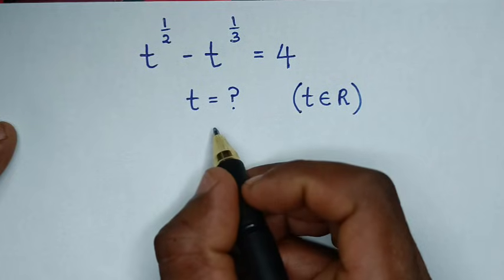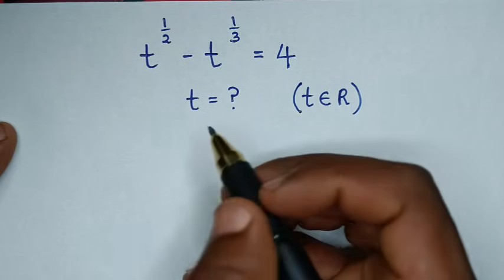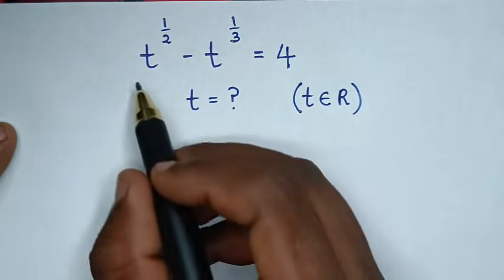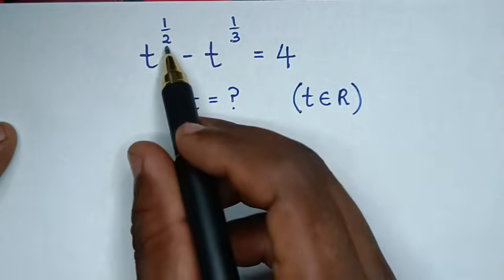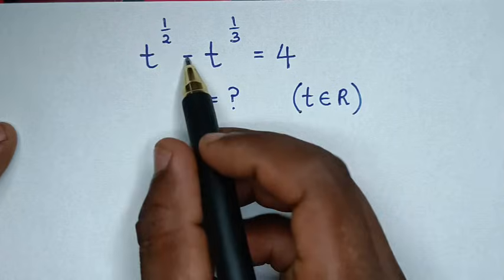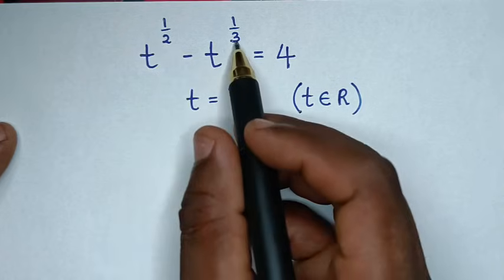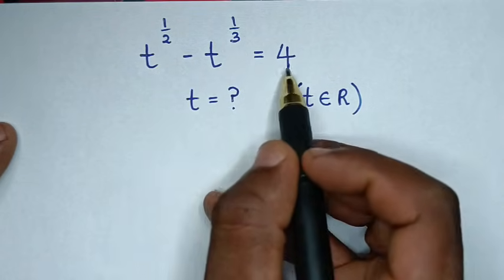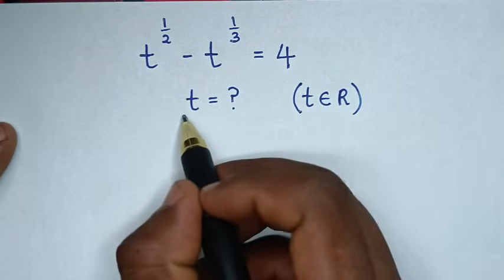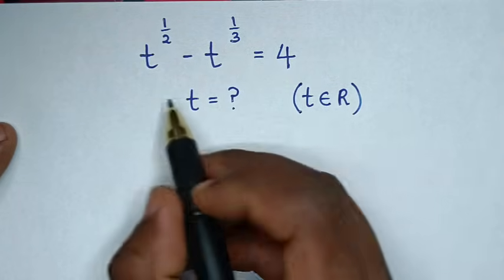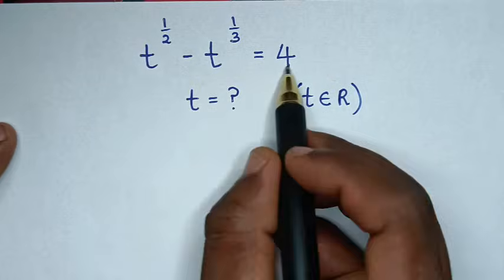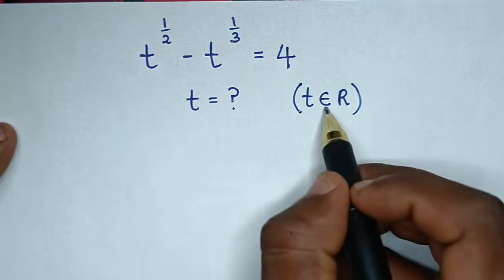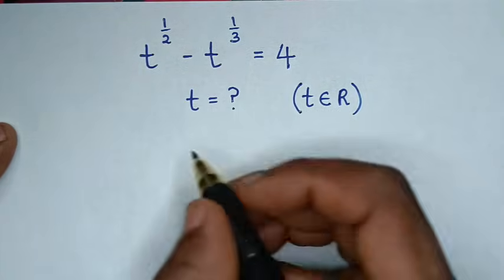Hello, you are welcome to solve this math problem, which is t to the power of one half minus t to the power of one third is equal to 4. We need to find the value of t from this equation, such that t is an element of the real numbers.